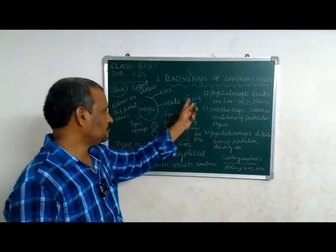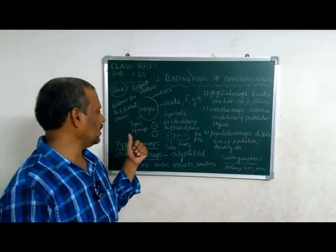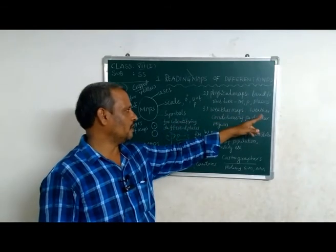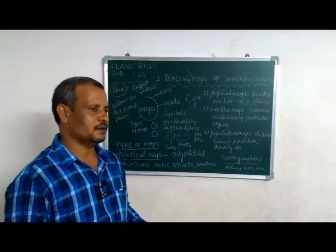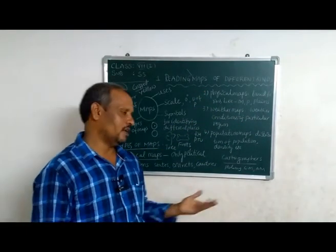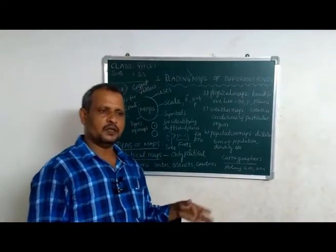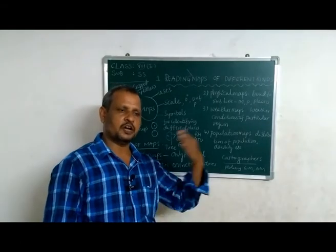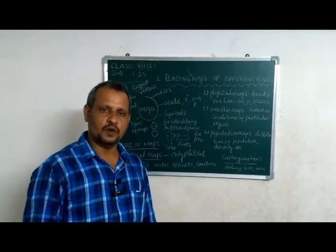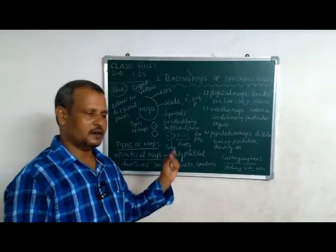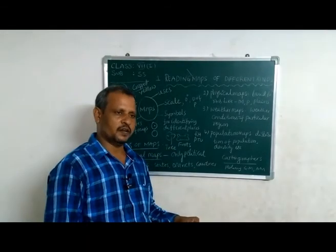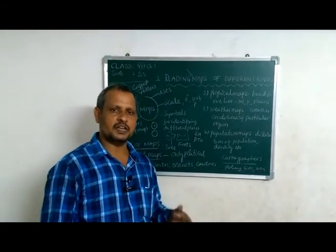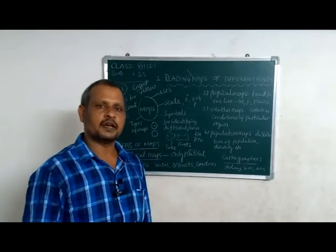Weather maps are the third type of map. Weather maps show the weather conditions of a particular region. Weather means the average conditions for a short period of time — day-to-day reports. Climate means the average weather conditions over a long period of time.